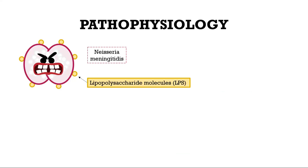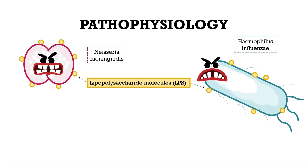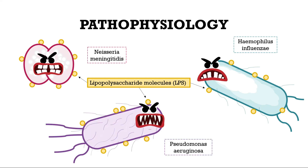Waterhouse-Friedrichsen syndrome is a dangerous complication of a number of diseases, but most commonly associated with meningococcal meningitis causing sepsis. Other pathogens could be Haemophilus influenzae, Pseudomonas aeruginosa, and others. Rarer causes include disseminated intravascular coagulation or endotoxic shock.